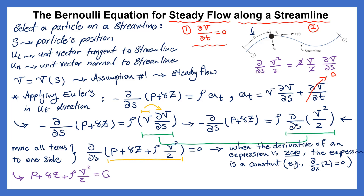This form — P plus gamma·Z plus rho·V²/2 equals constant C — is called the pressure form of Bernoulli's equation. It is called the pressure form because every single component has units of pressure: P has units of pressure, gamma times Z has units of pressure, and the kinetic term rho·V²/2 also has units of pressure.